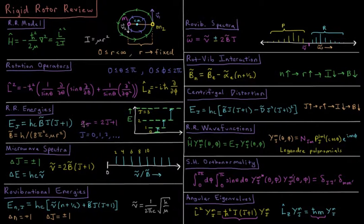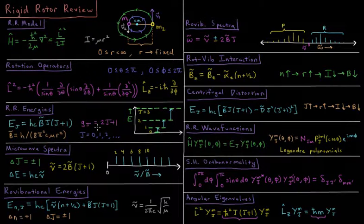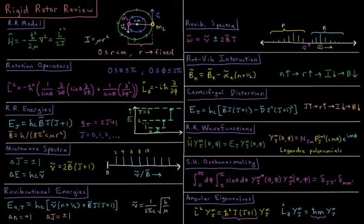We also have the degeneracy of each level increasing as we go up, starting with a singly degenerate ground state, 3-fold degenerate for j equals 1, 5-fold for j equals 2, and so on.